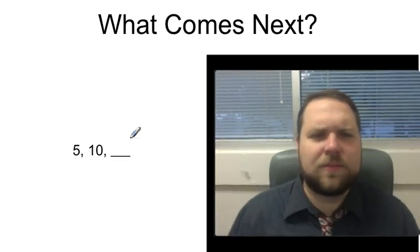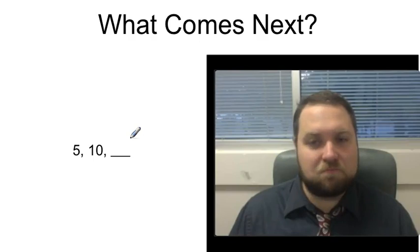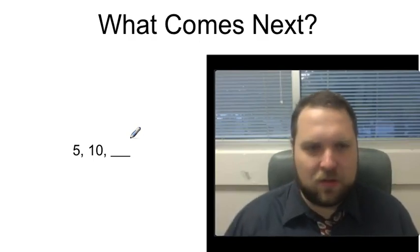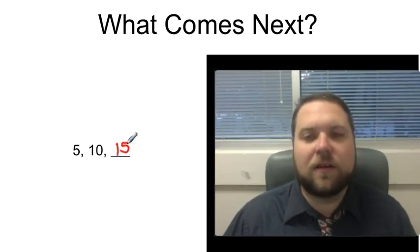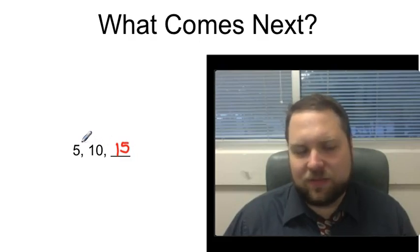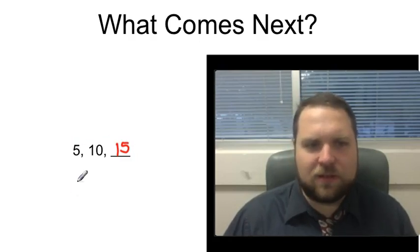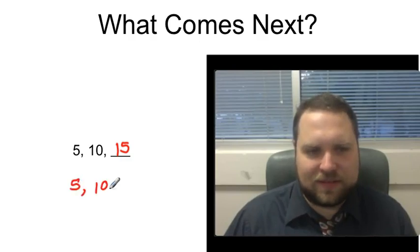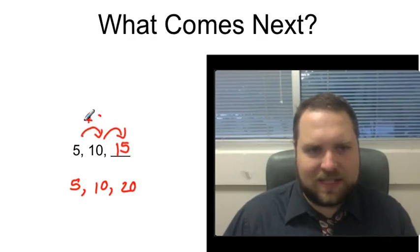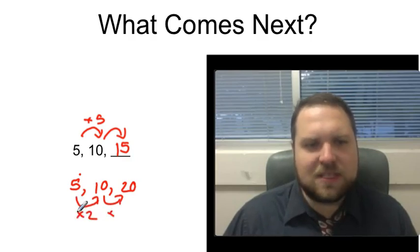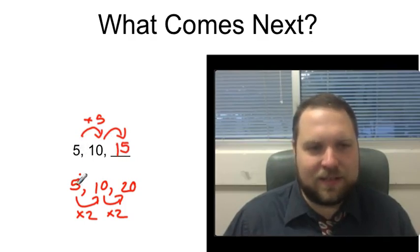Let's try another one. The next pattern: 5, 10 — what is it? The correct answer here is 15, but we have no guarantee that that's what happened. Maybe I'm adding 5, but couldn't it also be 5, 10, 20? Where instead of adding 5 each time, what if I was multiplying by 2 each time? So with this one, the pattern is a little less clear. I can't say for certain it's going to be 15, because it could also be 20.